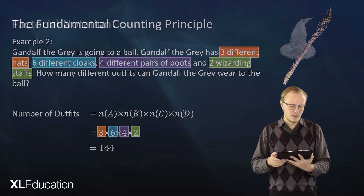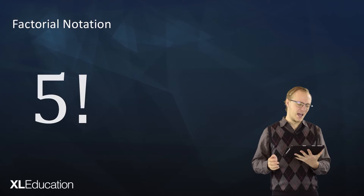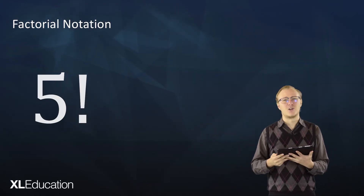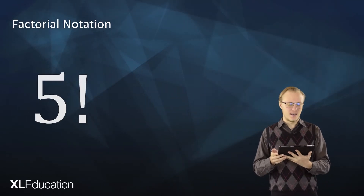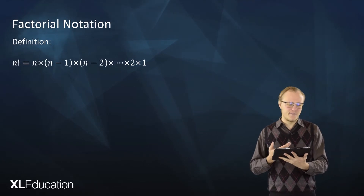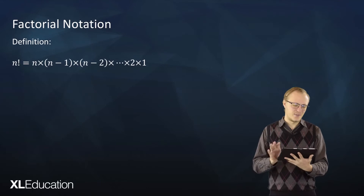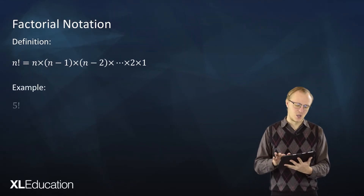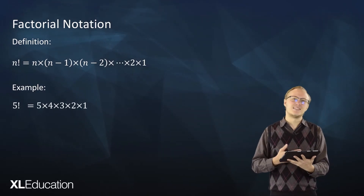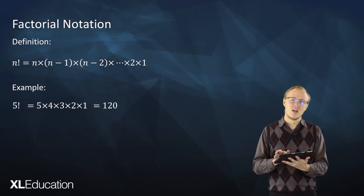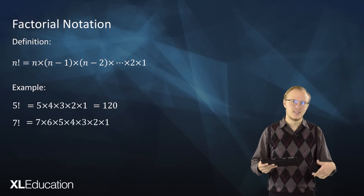Now we are going to introduce factorial notation. If you see an exclamation mark next to a number in math, that doesn't mean scream the number out loud — it actually means factorial. If we have n factorial, that means n times (n minus 1) times (n minus 2), all the way down to two times one. For example, five factorial means five times four times three times two times one, which equals 120. Seven factorial would be seven times six times five times four times three times two times one, which equals 5040.